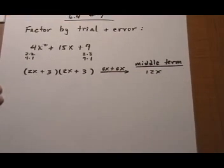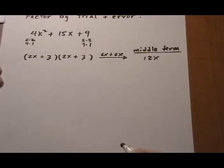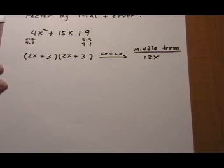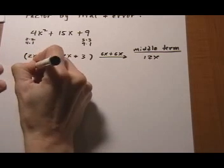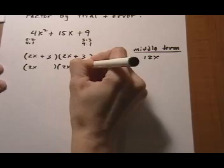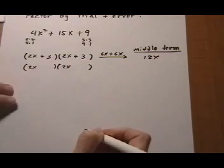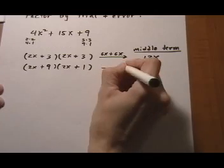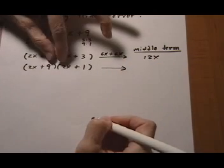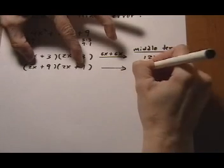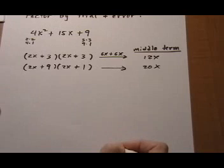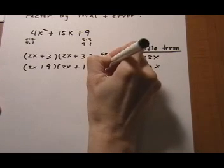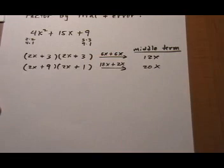And you just keep going until you find the one you want. Because we want 15x to be our sum. So then I stick with the 2x because I still have another option to try, the 9 times the 1. And I still know they're going to be plus and plus. And now I look at the middle. 18x plus 2x, 20x. That didn't work either.